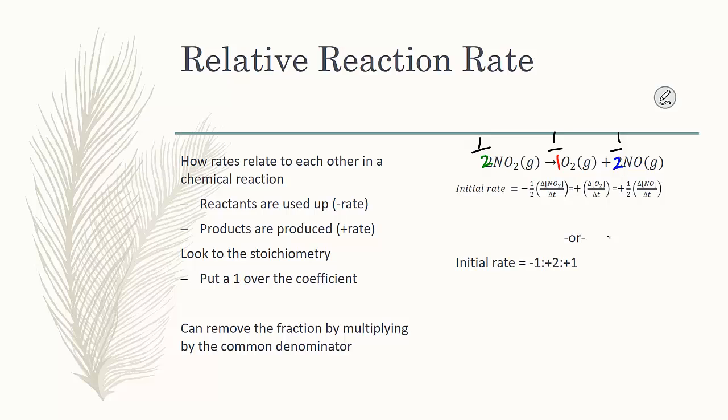Relative to one another, nitrogen dioxide is going to disappear twice as fast as oxygen. So the rate of that would be a negative one half to oxygen's one. But it's going to be the same as the rate at which nitrogen monoxide appears. So the instantaneous rate, we could express as a whole number value by finding the common denominator. In this case, 2. If I multiply everything here by 2, the 2's cancel out, and I can find the initial rate. Relative to one another, it's a negative 1 to 2 to 1.